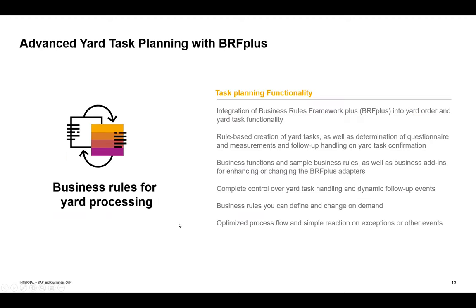Business rules give you complete control over yard task handling and dynamic follow-up events. For example, when a door becomes free, the system can automatically check for other transportation units that need that door and send a call-off to those units to move through the door. This is very time-efficient, ensures no manual steps are forgotten, and keeps the yard moving without anything being left behind.